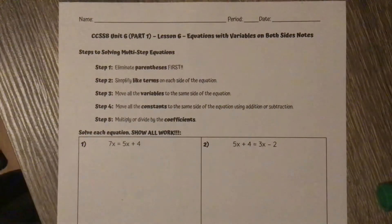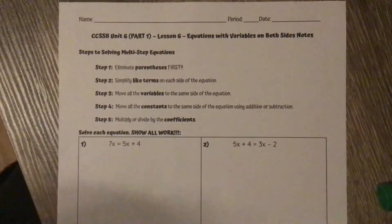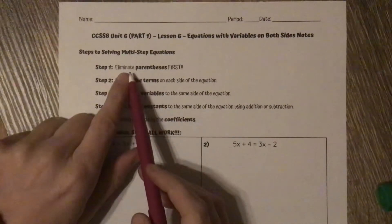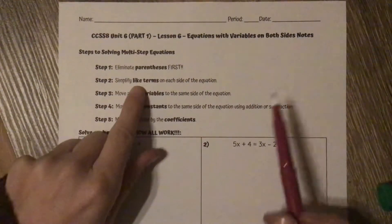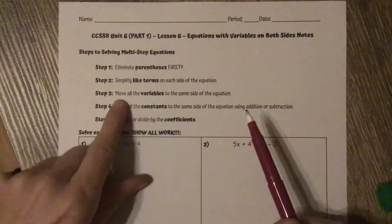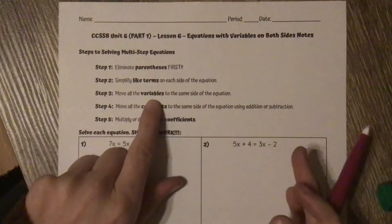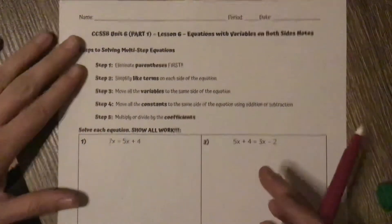Let's take a look at equations with variables on both sides. The only difference is that the variables appear on both sides. As always, we want to get rid of parentheses first, then combine like terms on each side. Then we're going to move all the variables to one side of the equation — it does not matter which side. Then everything else is the same: moving the constants and multiplying or dividing by the coefficients.